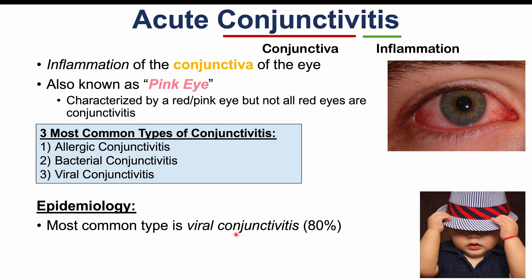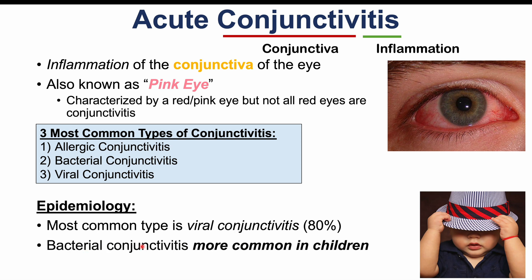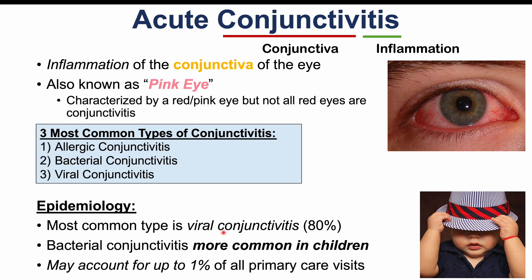Although viral conjunctivitis is the most common type overall, there are differences depending on the population. In children, bacterial conjunctivitis is more common, whereas in adults, viral conjunctivitis is more common. Acute conjunctivitis is a very common condition and accounts for up to 1% of all primary care visits.